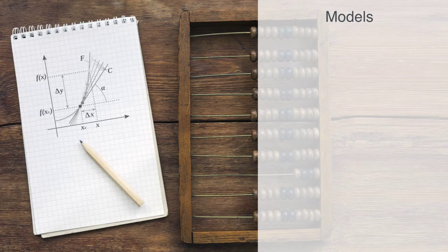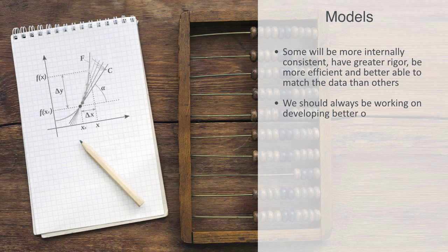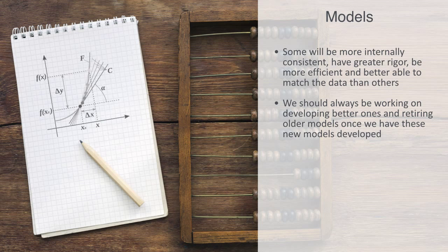We'll also note that no theory is going to be perfect, but some will be more internally consistent, have greater rigor, be more efficient, and better able to match the data than others. Because all models are not perfect, they will have a life cycle, meaning we should always be working on developing better ones and retiring old ones, once we have these new models developed. Of course, this is not an orderly process, it is a very messy one in practice, but this evolutionary process is necessary for the science to develop and grow.